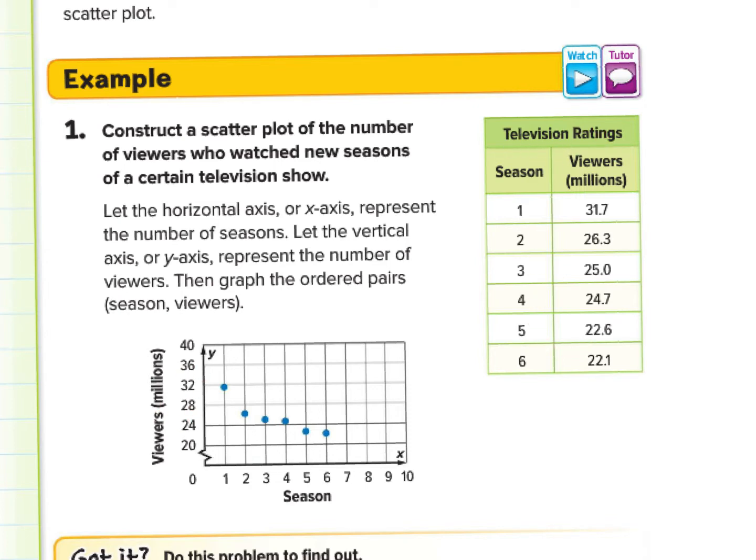Television ratings. Here we have what you call a function table. And here we have essentially a coordinate, or a graph, a scatter plot. And we see season 1, 31.7. Season 2, 26.6. Season 3, 25 viewers. Season 4, 24.7 viewers. And you're probably wondering, how do you get .7 or .3? Well, it's in the millions. We're talking in the millions. As you can see, that's our unit. And then we will graph this order pair. These being your x values, and these being your y's.